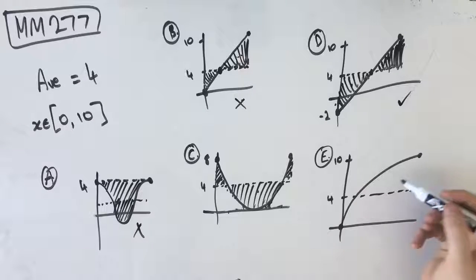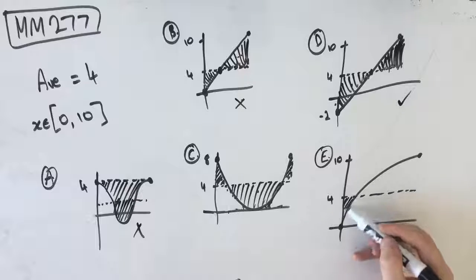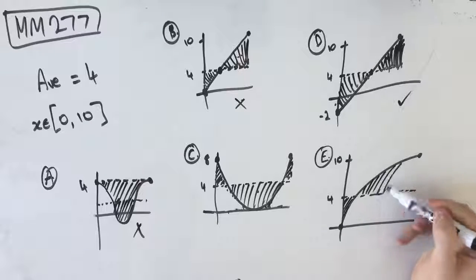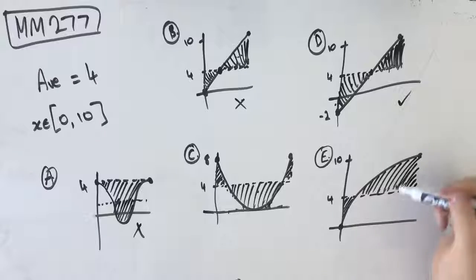So we can see that D is going to be our answer, and we can even check option E as well, which means that this area should be the same as this area if the average value is 4, but we can easily see that that's much bigger than that, so it's not our average value.